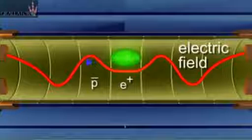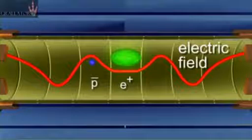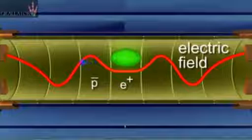The electrodes are used to generate the electric potential which confines the antiprotons and positrons before they form antihydrogen.